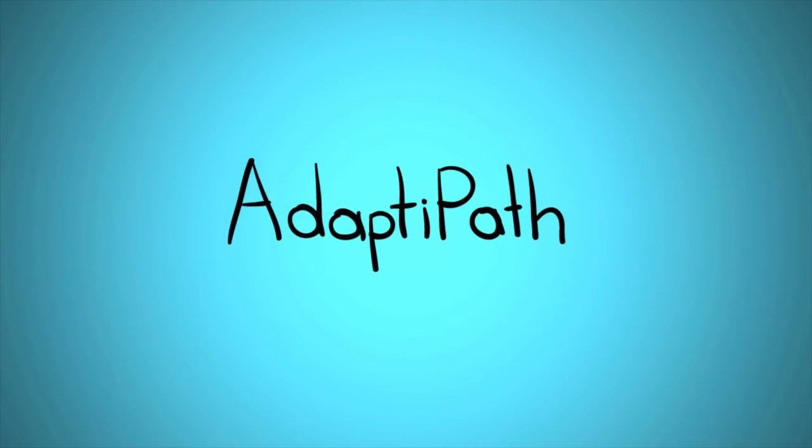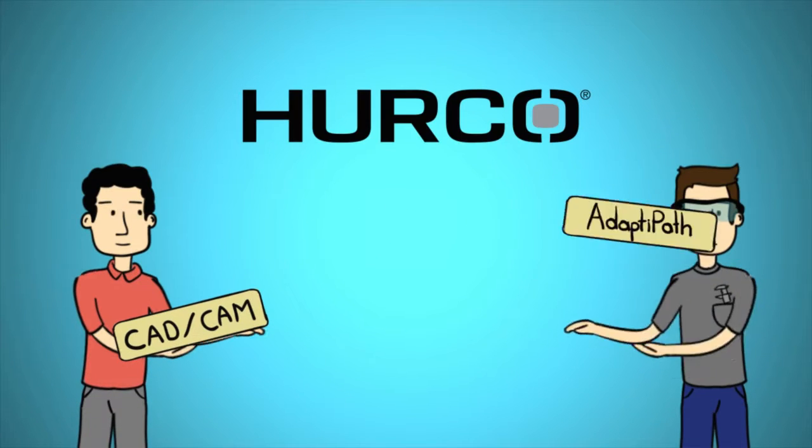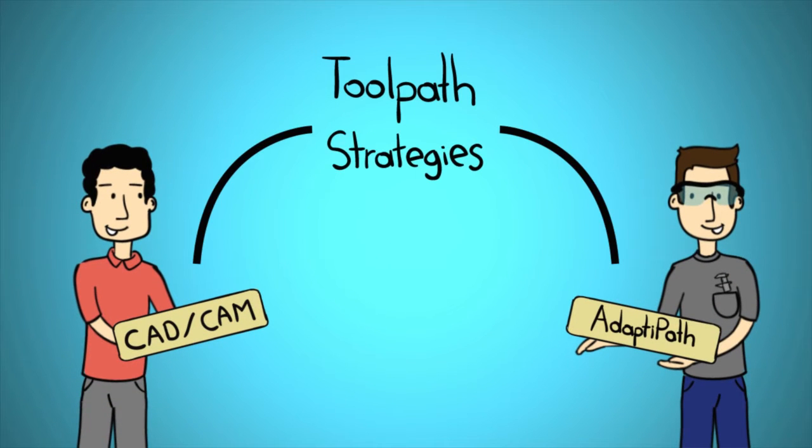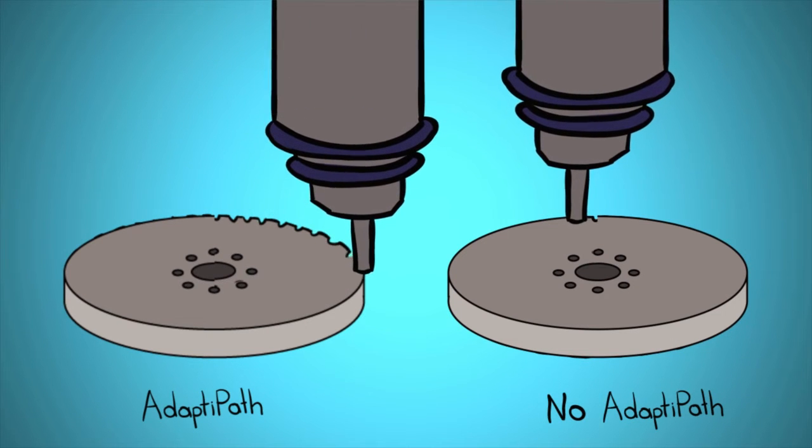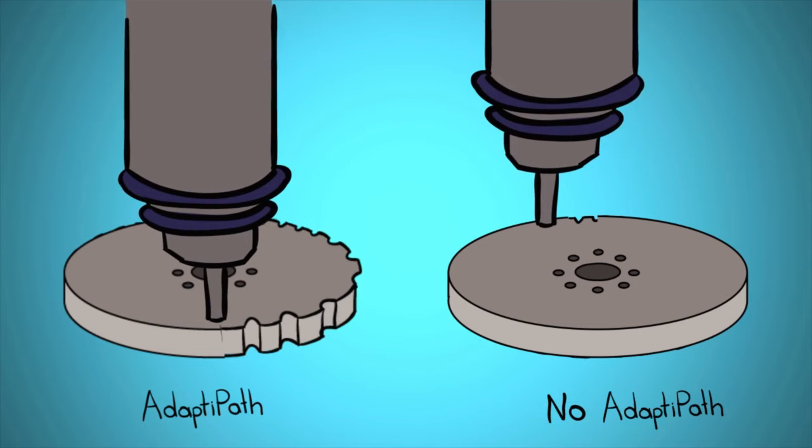With technology like Adapt-A-Path, Herco's conversational programming has the same toolpath strategies that high-end cam packages have. Adapt-A-Path's advanced algorithms control how much material the tool will encounter, even in the corners.